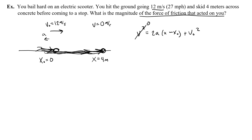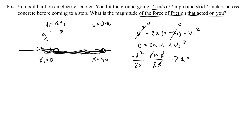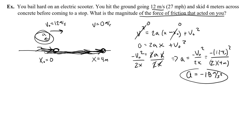Getting rid of zeros first: the final velocity is 0 and the initial position is 0. This gives 0 equals 2ax plus v₀². Solving for acceleration: subtract v₀² from both sides, then divide by 2x. The acceleration equals negative v₀² over 2x, which is negative (12 m/s)² divided by 2 times 4 meters, giving negative 144 over 8, which is negative 18 meters per second squared. The negative sign makes sense because the acceleration opposes the rightward motion.